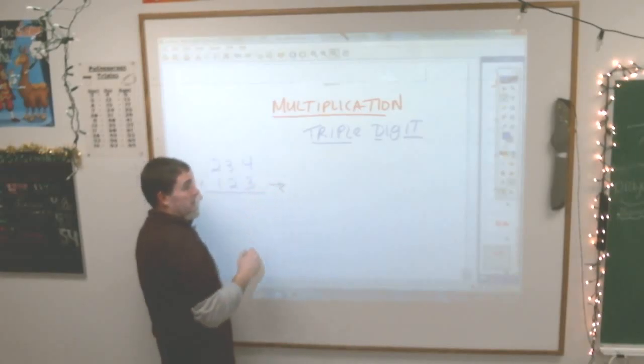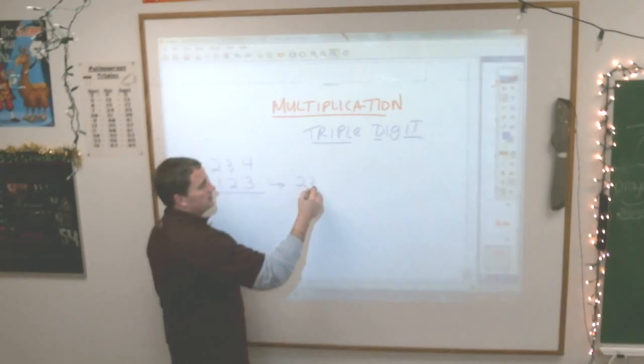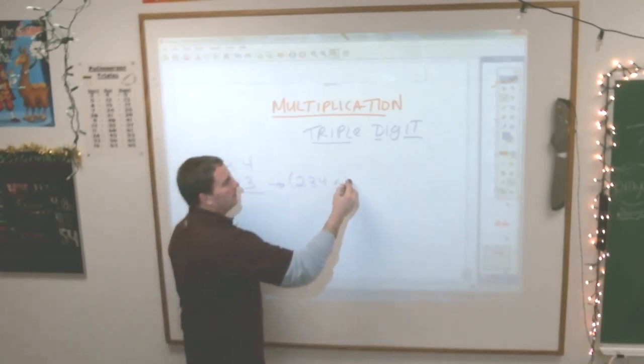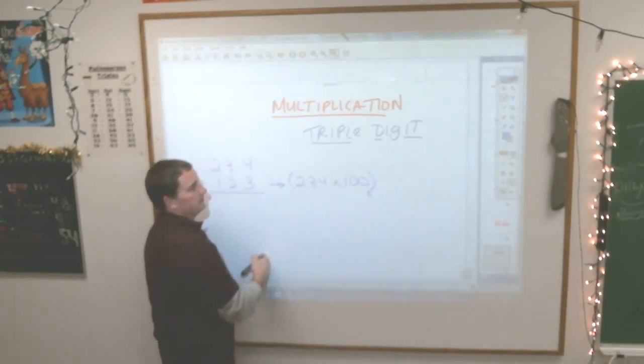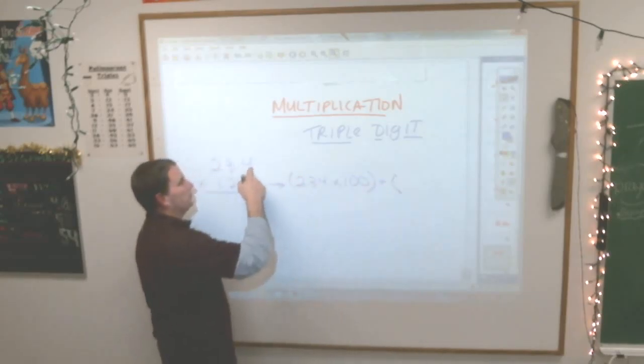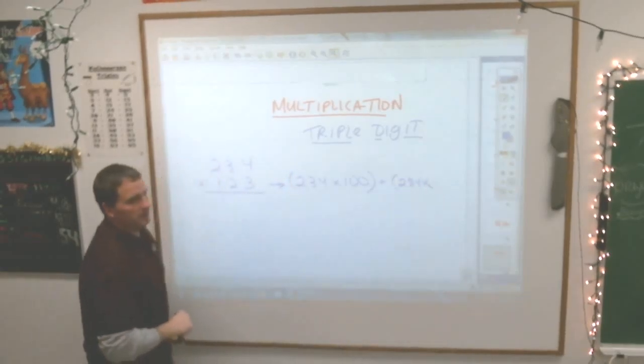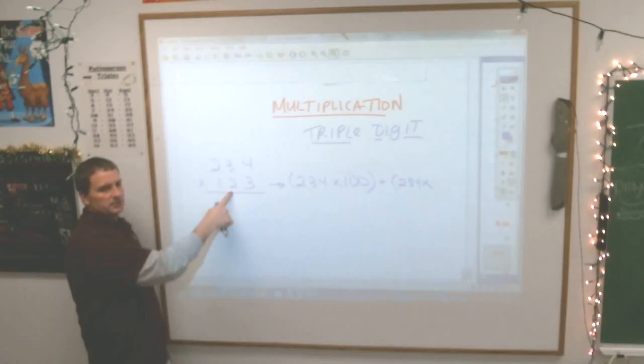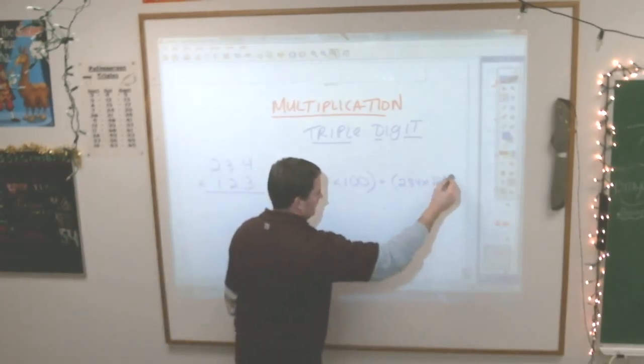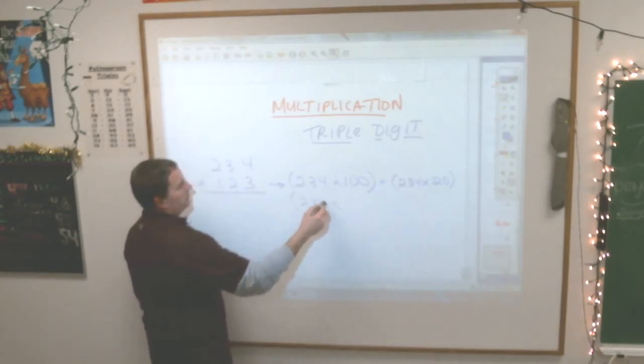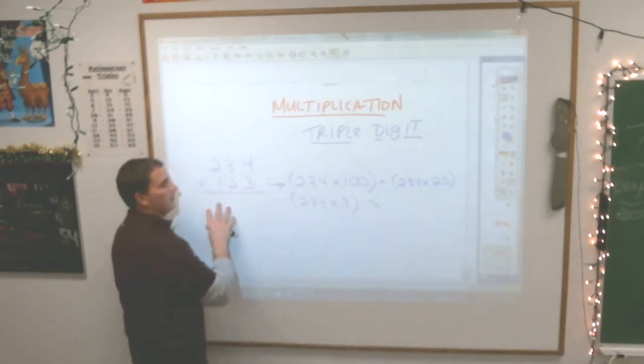Instead of doing this problem like this, if I really wanted to, I could take 234 and multiply it by, not a 1 here, but a, what is that? Because it's in that place it's a 100. Then I would have to take this 234 and multiply it by a, what would be the next thing? The 2, but it's not a 2, it's a 20. And then I'd have to take 234 and multiply it by a 3. That one is a 3. And then add all those together and I'm going to get my answer here.